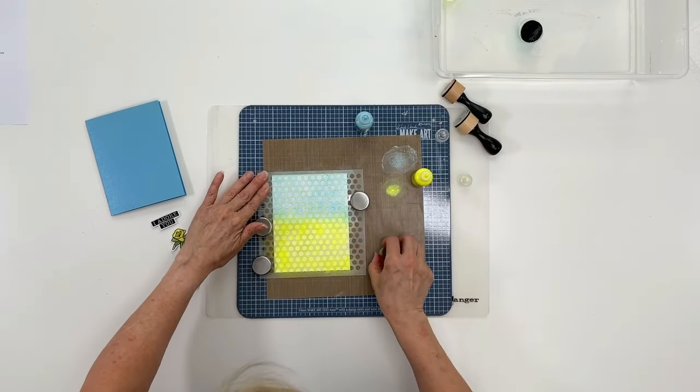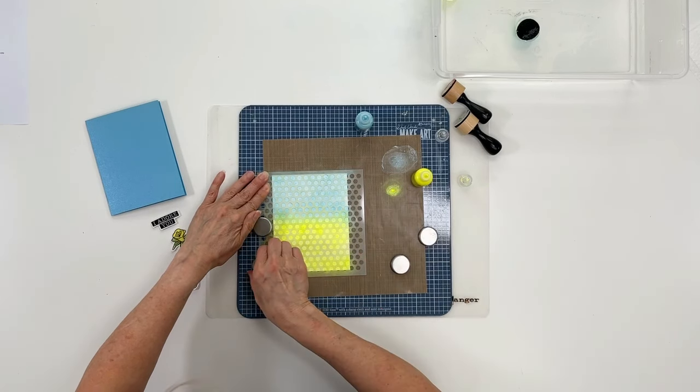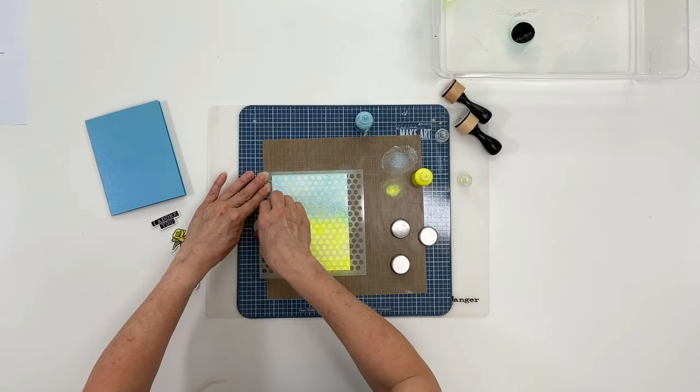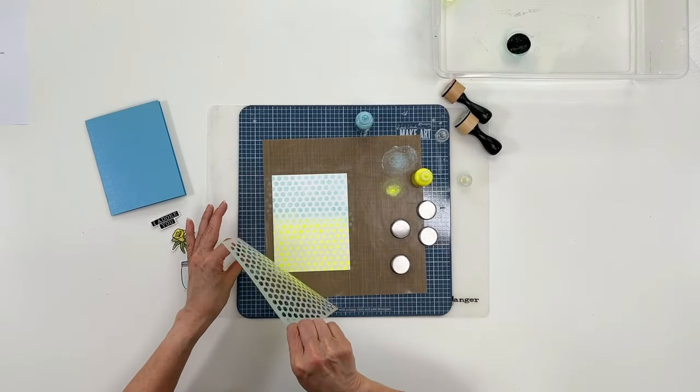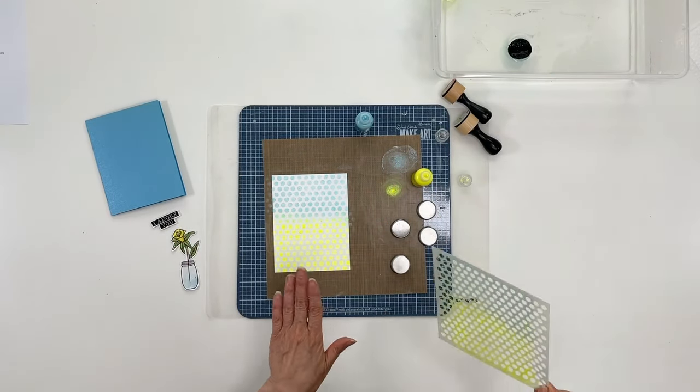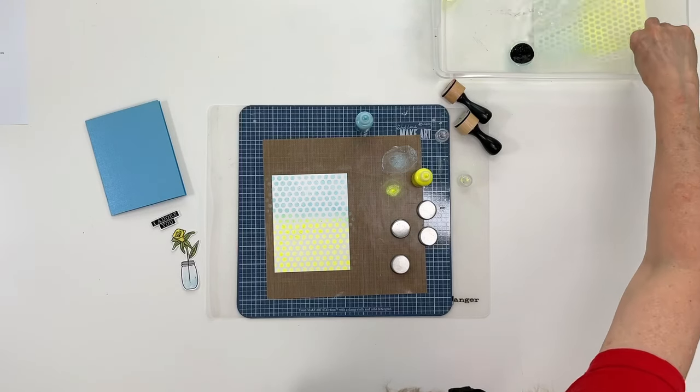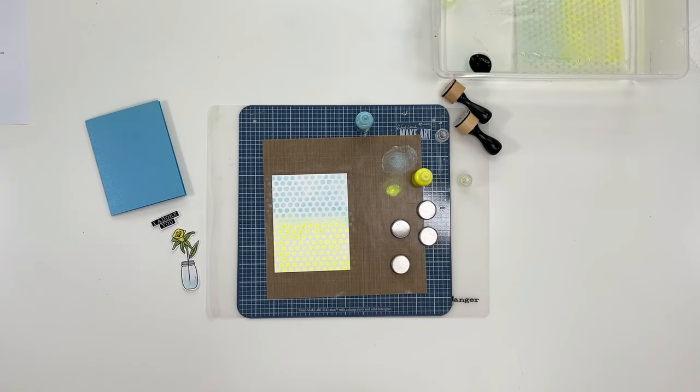Now I'm ready to remove the stencil. I'll carefully move the magnets away while I'm holding the stencil. Then I'm going to lift this up carefully as well. We're going to just let this sit here and dry, and then we're going to come back and finish this up.